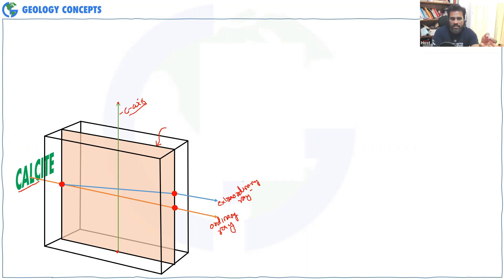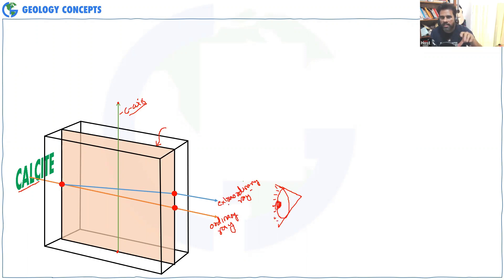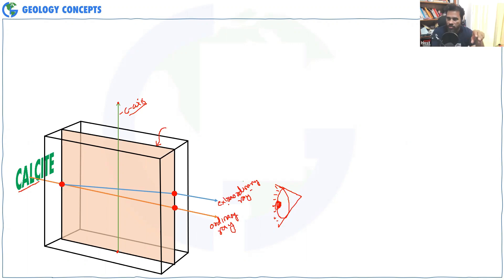Now, if you are looking from this side of the crystal, can anyone guess what you will see? If you are looking from this side at the face, you will see face A B C D. Is that clear?